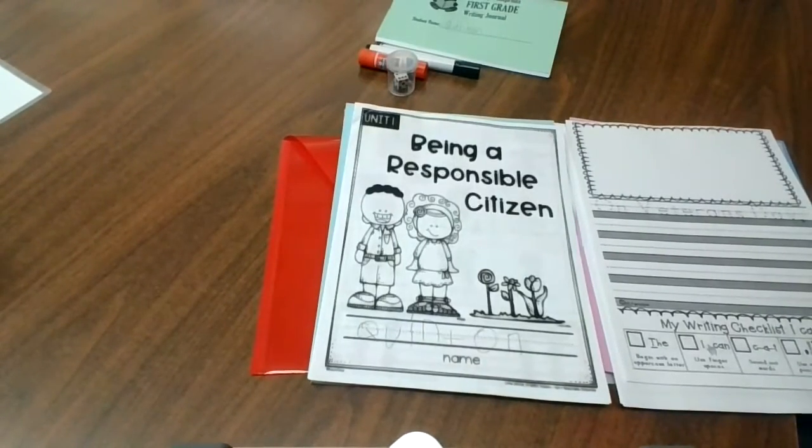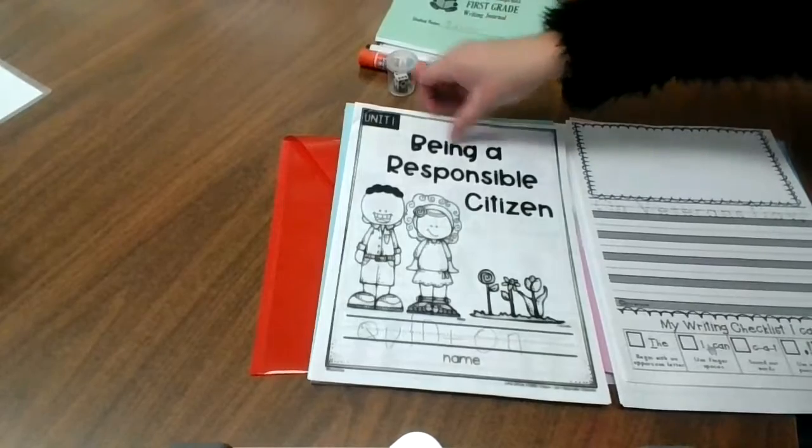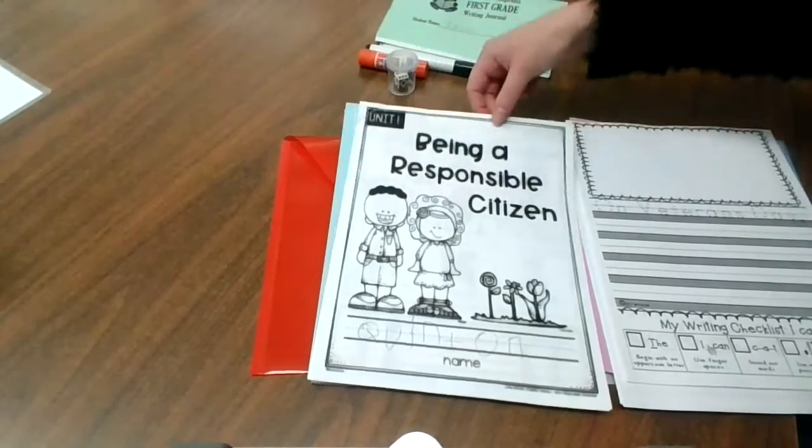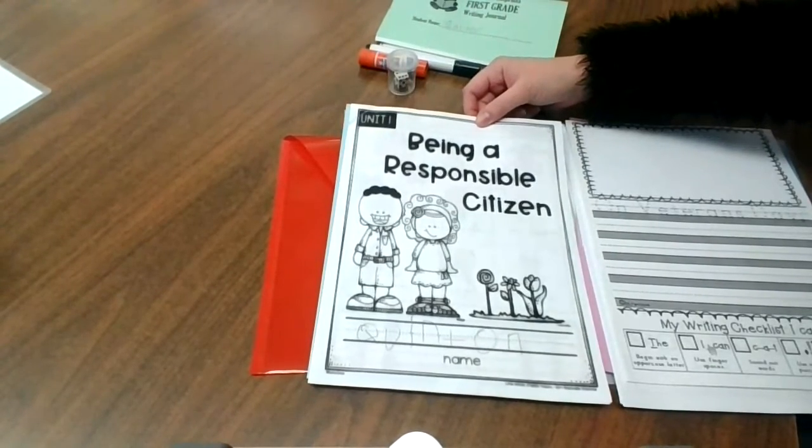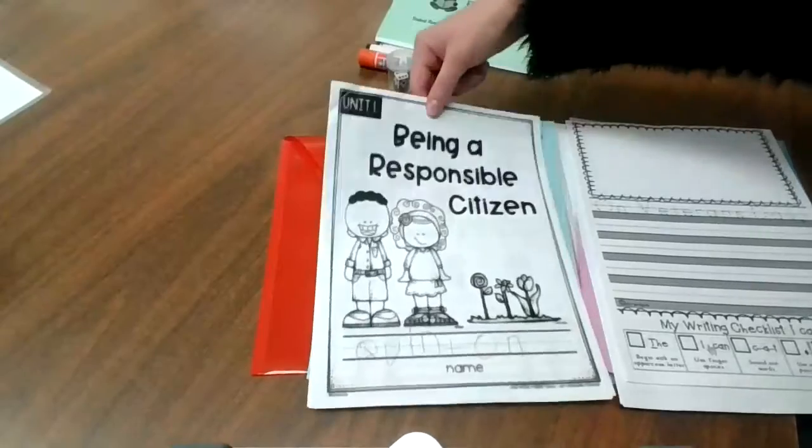Then you will see our responsible citizen packet. We're about halfway through this. This is what we're going to be working on to finish out our social studies unit.